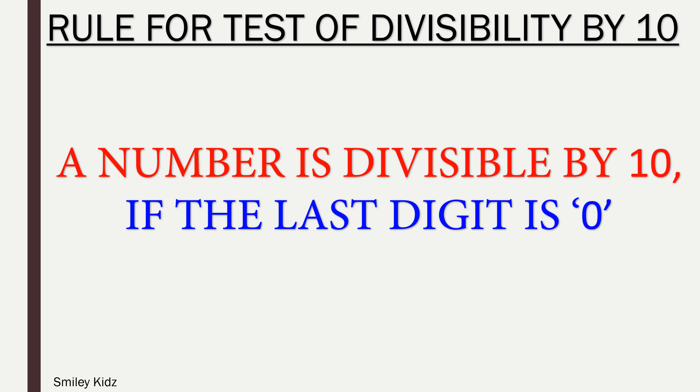Rule for test of divisibility by 10: a number is divisible by 10 if the last digit is 0.